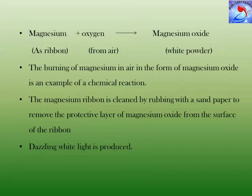The magnesium ribbon is cleaned by rubbing it with sandpaper to remove the protective layer of magnesium oxide from the surface of the ribbon.